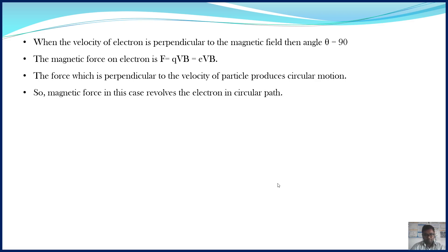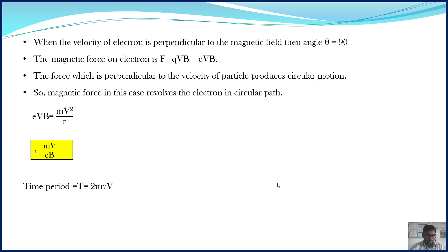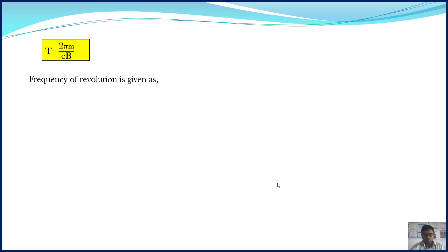Circular path requires centripetal force, and in this case the centripetal force is provided by the magnetic force. So eVB equals mv²/r, giving r equals mv/eB. The time period of revolution is T equals 2πr/v. Substituting the value of r gives T equals (2π/v) times (mv/eB), so the period T equals 2πM/eB. From the period, we can calculate the frequency of revolution: f equals 1/T, which is eB divided by 2πM.